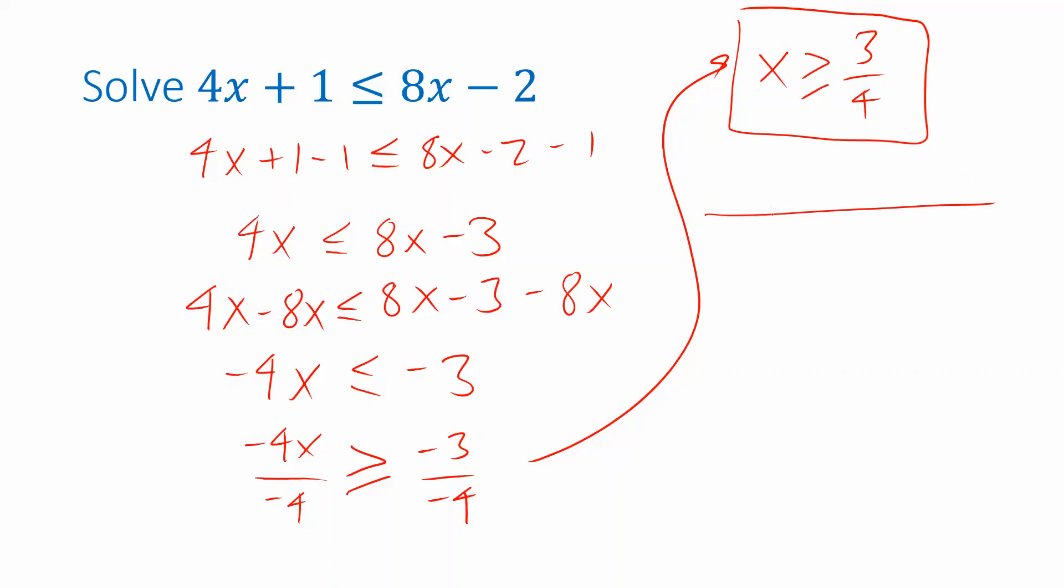Visualize this on a number line. 3 fourths is here somewhere between 0 and 1. So again, I'm going to draw a circle there and this time I want all the x's that are greater than that to be shaded. And I also want the x that's equal to 3 fourths to be shaded on my number line. So this time I shade in the circle. I include it in my image, in my figure. So this is a way of visualizing what values you can plug in that will make this inequality true.